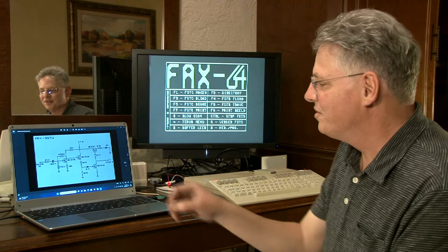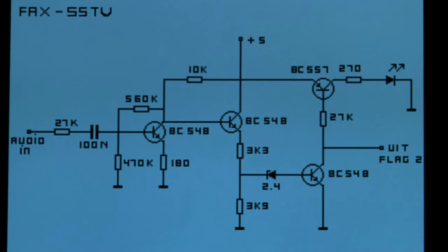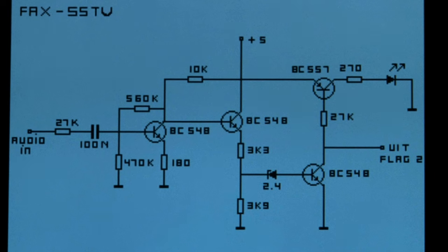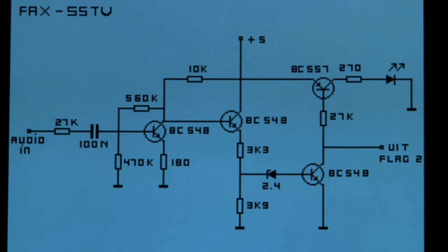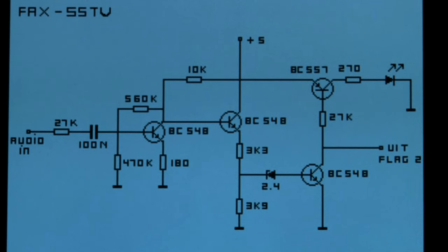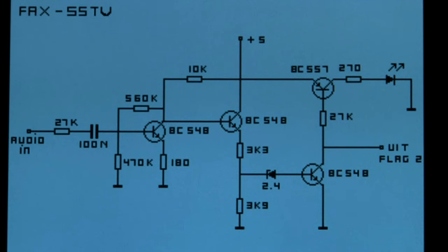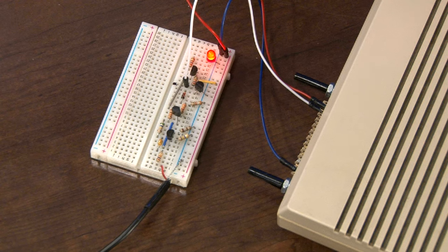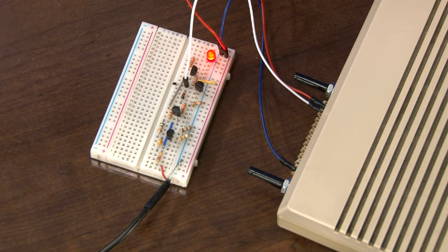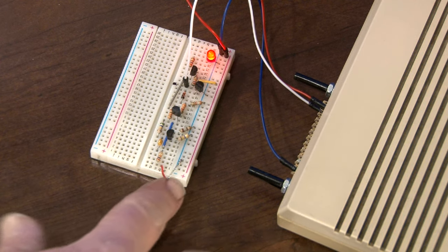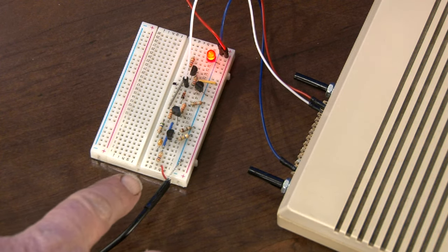This is the circuit diagram that was included with the disk, and it allows you to build the interface necessary to take the analog audio input — normally from a radio, but in our case from a laptop — and convert it into a TTL level signal that the computer uses. The signal is then interpreted by the software into an image. Here we have the completed FACS SSTV interface. I used a breadboard for simplicity. The audio input comes from the radio or the computer. The ground connects to the ground on the board, and the red wire — the positive wire — connects to the 27k resistor.